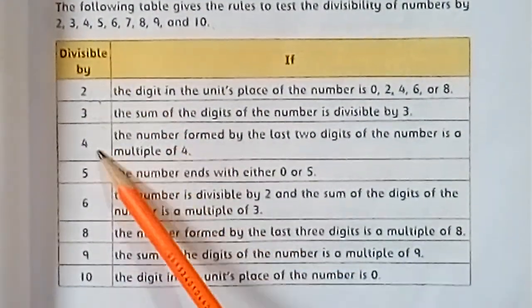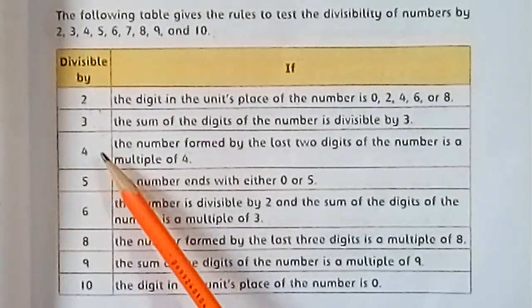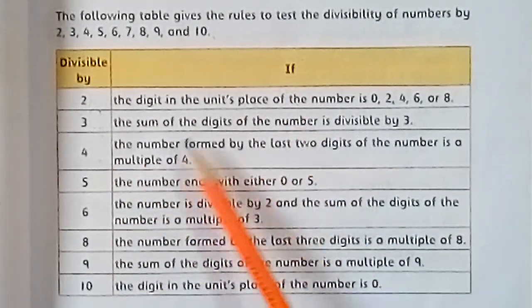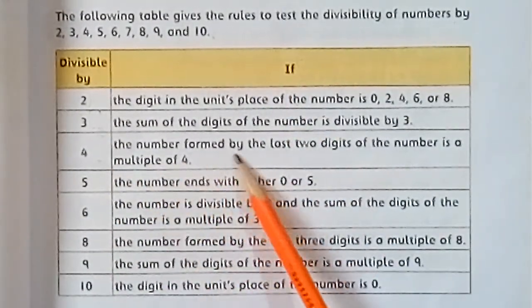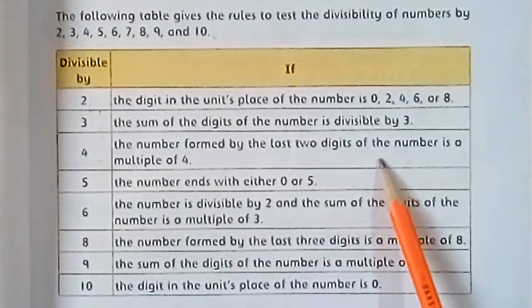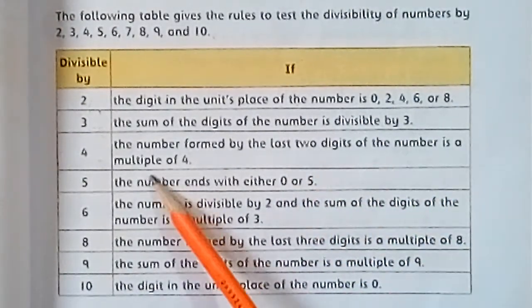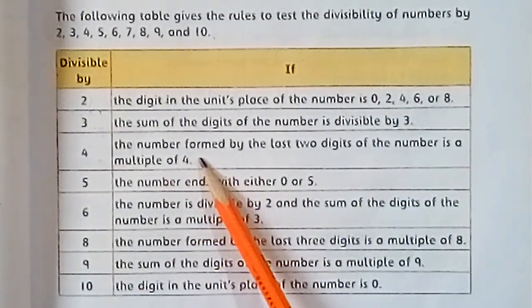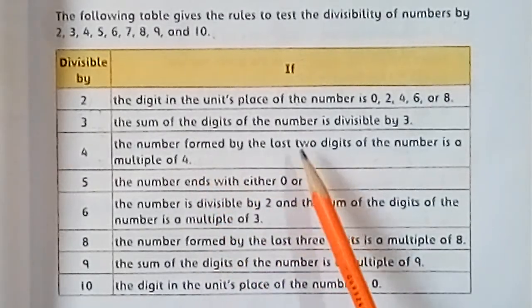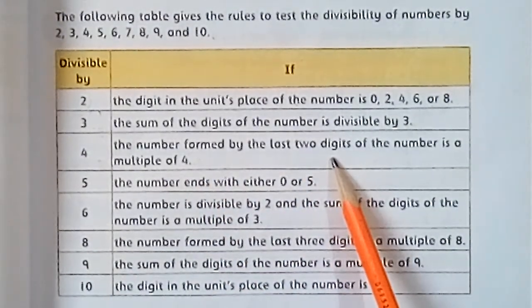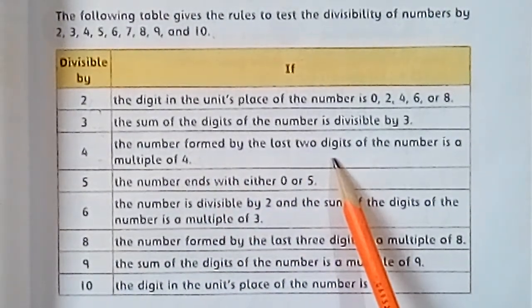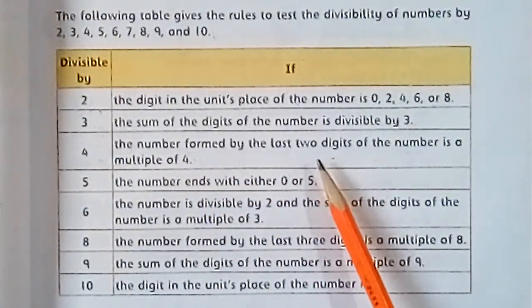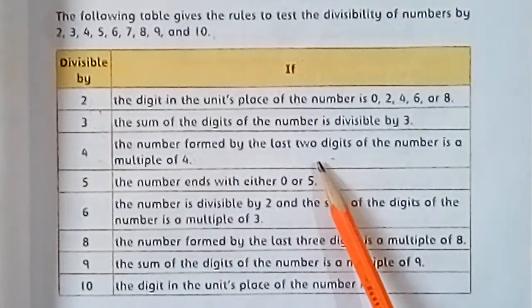The next one is divisible by 4. A number is divisible by 4 if the number formed by the last two digits is a multiple of 4. If the last two digits are divisible by 4, it means the original number is divisible by 4.